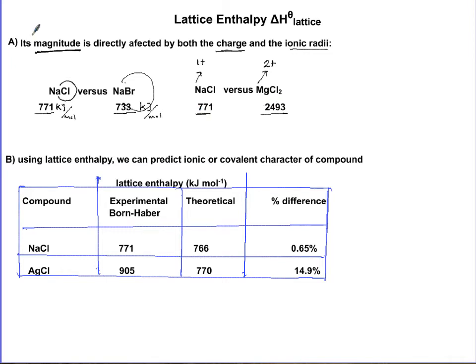So, for multiple choice purposes, remember: magnitude is directly proportional to the charge — the higher the charges, the stronger the lattice enthalpy — and the smaller the ionic radii, the stronger the lattice enthalpy. The other information you can gather is if you have both experimental and theoretical values of lattice enthalpy for a compound.